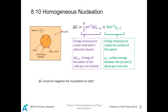Homogeneous nucleation can be described using the formula here. G is the free energy change, described by two terms. The first term — the first purple term — describes the energy necessary to create a solid with spherical volume. Delta G liquid-to-solid is the energy of formation of the solid per unit volume, and this is the volume of the nucleus. The second term describes the energy necessary to create the surface between the solid and the liquid.